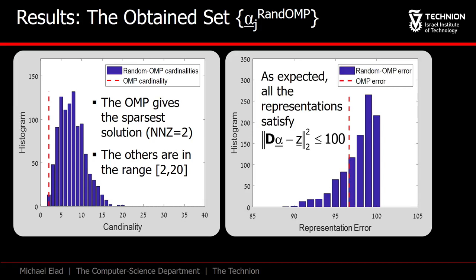What about the epsilon constraint? As you can see, all solutions obey the constraint and give a squared error below 100.